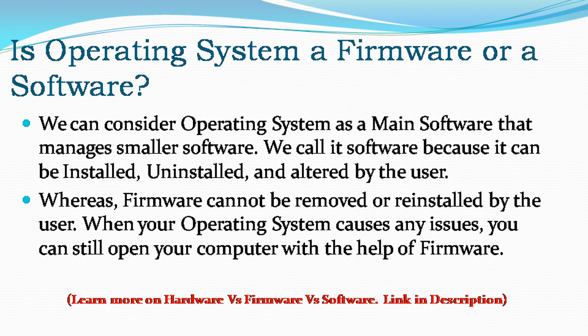Is an operating system a firmware or a software? We can consider an operating system as a main software that manages smaller software. We call it software because it can be installed, uninstalled, and altered by the user. Whereas firmware cannot be removed or reinstalled by the user. When your operating system causes any issues, you can still open your computer with the help of firmware.